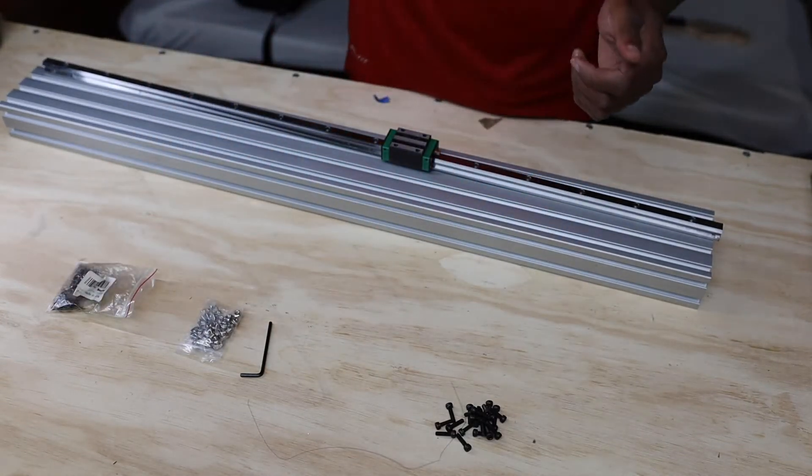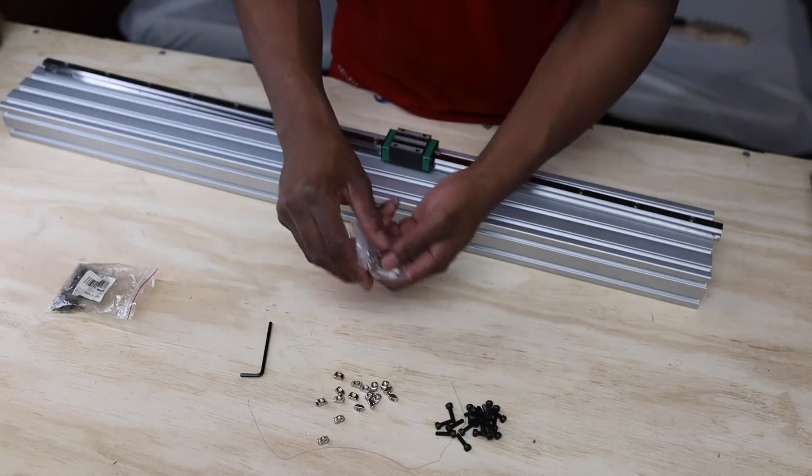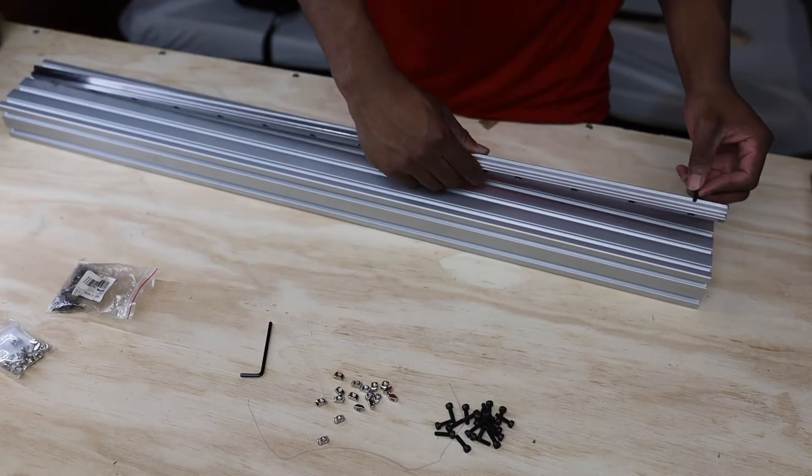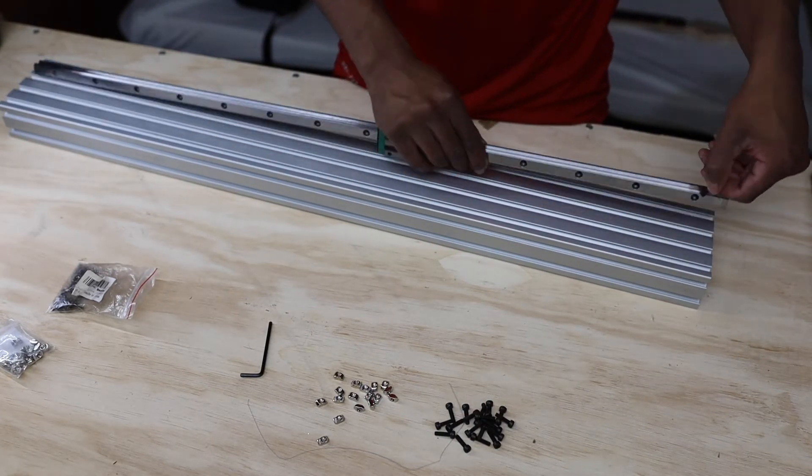Then I moved on to my X-axis. I built it using two linear rails attached into the grooves of the extrusion using T-nuts to clamp it down.